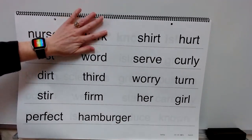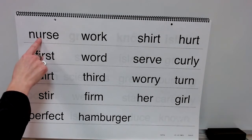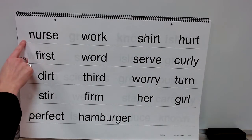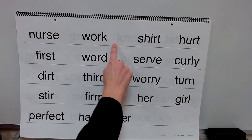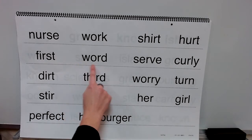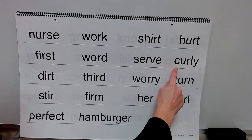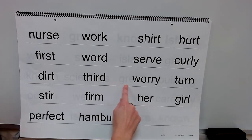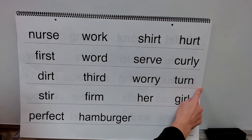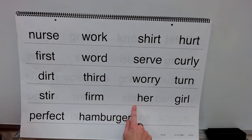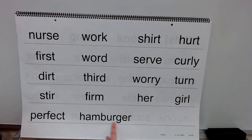This is a reminder: we have been working on spelling words with ur spelled U-R, O-R, I-R, and E-R. Let's read these words: nurse, work, shirt, hurt, first, serve, curly, dirt, third, worry, turn, stir, verb, her, girl, perfect, hamburger.